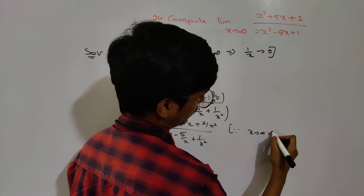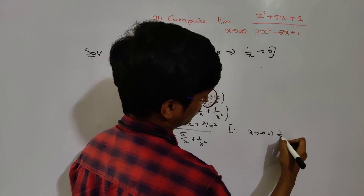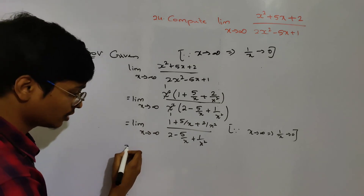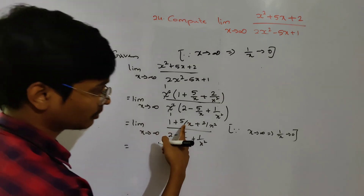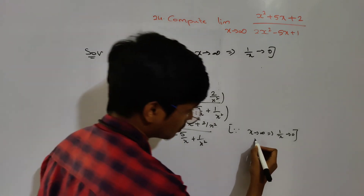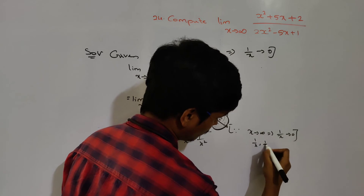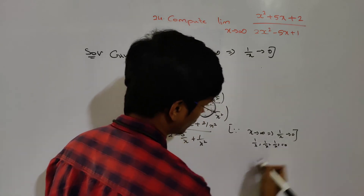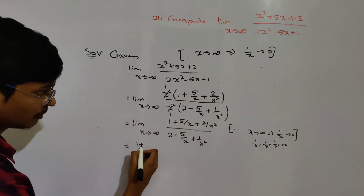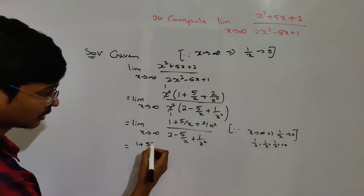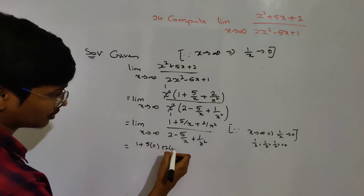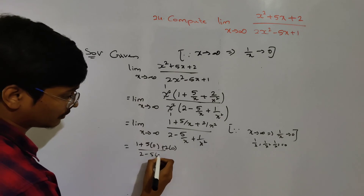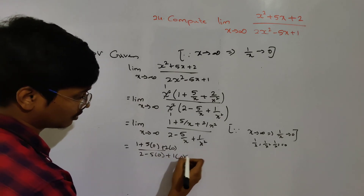When x tends to infinity, 1 by x tends to 0. So we can directly substitute: 1 by x equals 0, 1 by x squared equals 0, and 1 by x cubed equals 0. Substituting: 1 plus 5 times 0 plus 2 times 0, divided by 2 minus 5 times 0 plus 1 times 0.